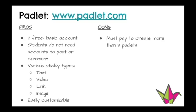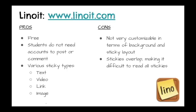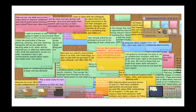The big con is that since they've moved to a more paid model, you have to pay if you want to create more than three Padlets. Here's an example of a KWL chart I created in Padlet for my students about fossils. Another alternative is Linuit.com. It is free, students do not need accounts, and there are various sticky types such as text, video, link, and image. However, it's not very customizable, and the stickies can overlap, making it difficult to read all of them — which could be a deterrent if you have a lot of students.